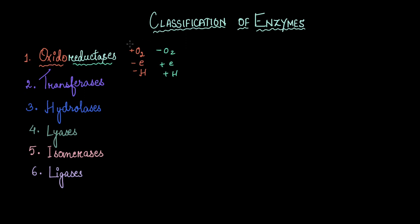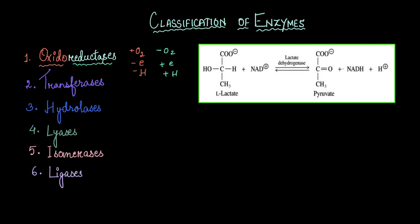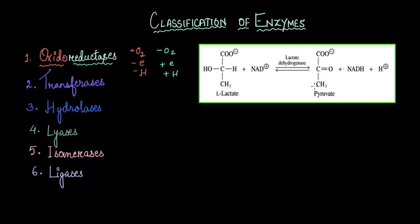It is called oxidases, reductases, or dehydrogenases because it also removes hydrogen. Let's look at an example of lactic acid fermentation. Here lactate is getting converted to pyruvate, or pyruvate can be converted to lactate—it's a reversible reaction. I want you to carefully look at this part of the lactate molecule which has one alcohol group attached to the carbon and an additional hydrogen.